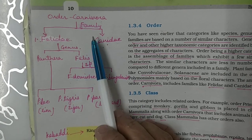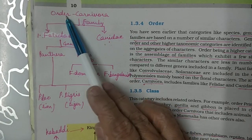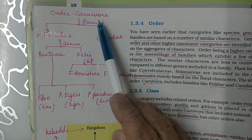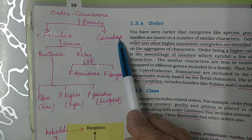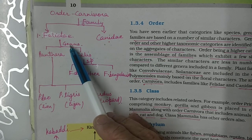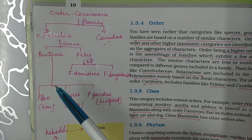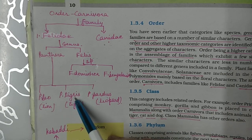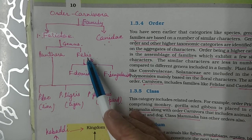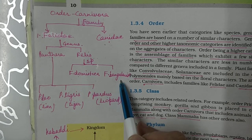Looking at the flowchart — order Carnivora has two families: Felidae and Canidae. Under Felidae there are two genera: Panthera and Felis. Panthera has three species — Panthera leo, Panthera tigris, and Panthera pardus. Felis has two species — Felis domestica and Felis bengalensis.